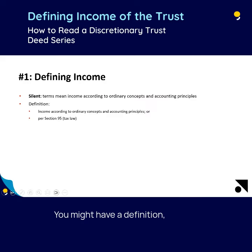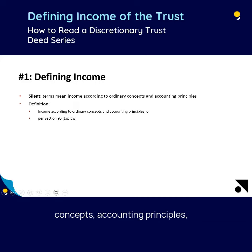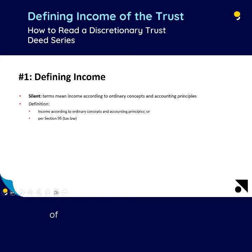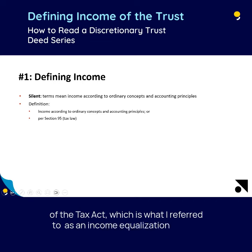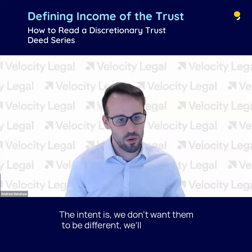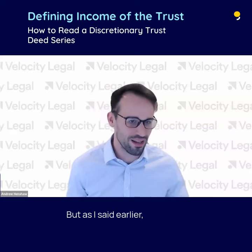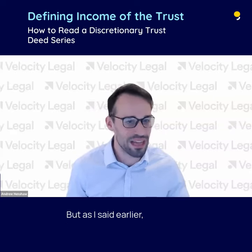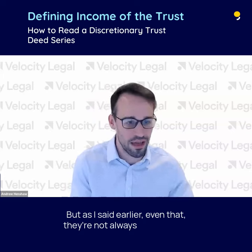You might have a definition, and the two most common ones are ordinary concepts and accounting principles, or income means pursuant to section 95 of the Tax Act — which is what I refer to as an income equalization clause. The intent is we don't want them to be different, so we'll equalize them. But even that, they're not always equal either.